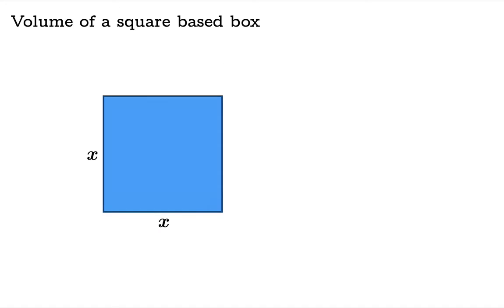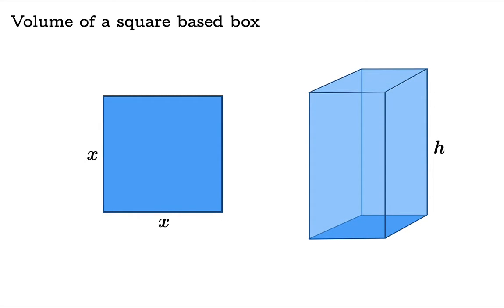You could take a square and lay it on the ground and then build a box out of it and sweep it through height h, and the volume will be the base area times the height. In this case the area is x squared, so we've got this formula for volume of a box with a square base.